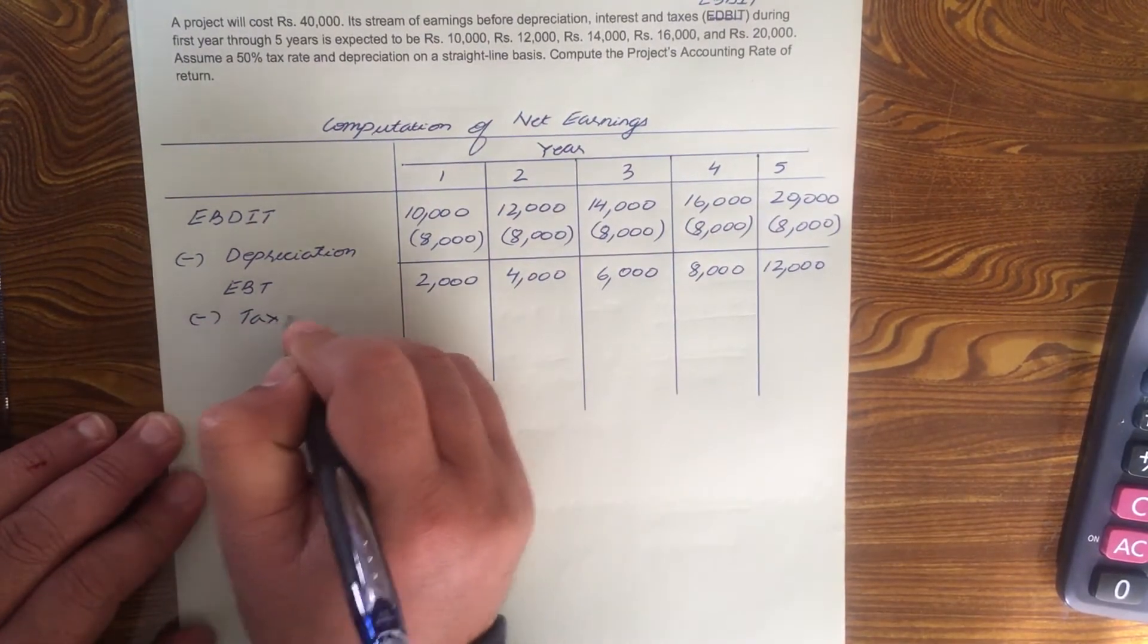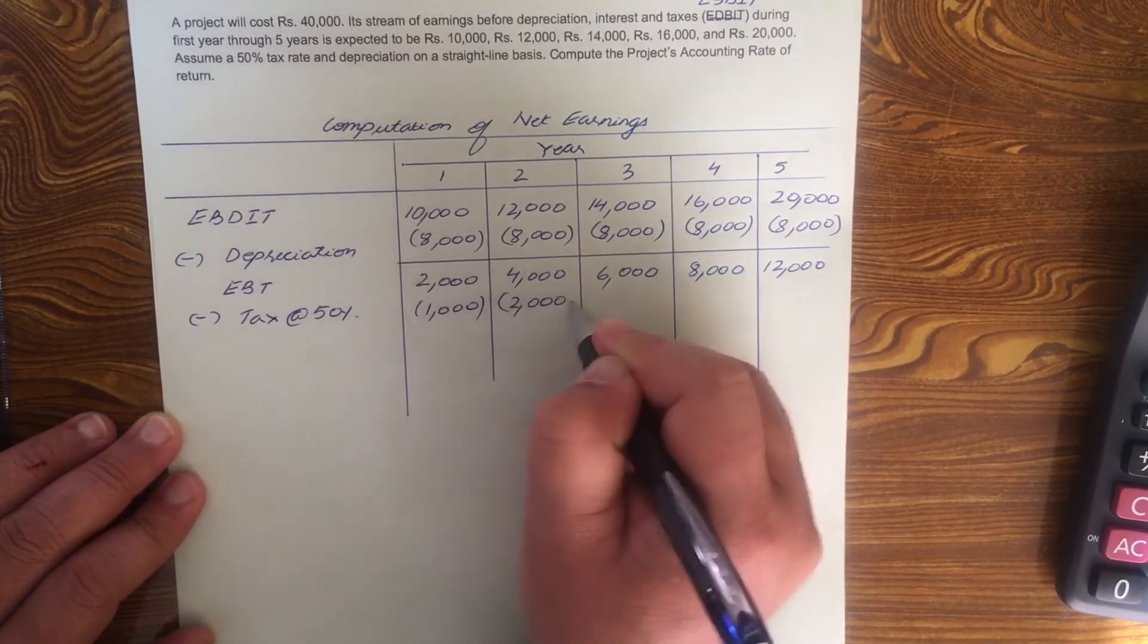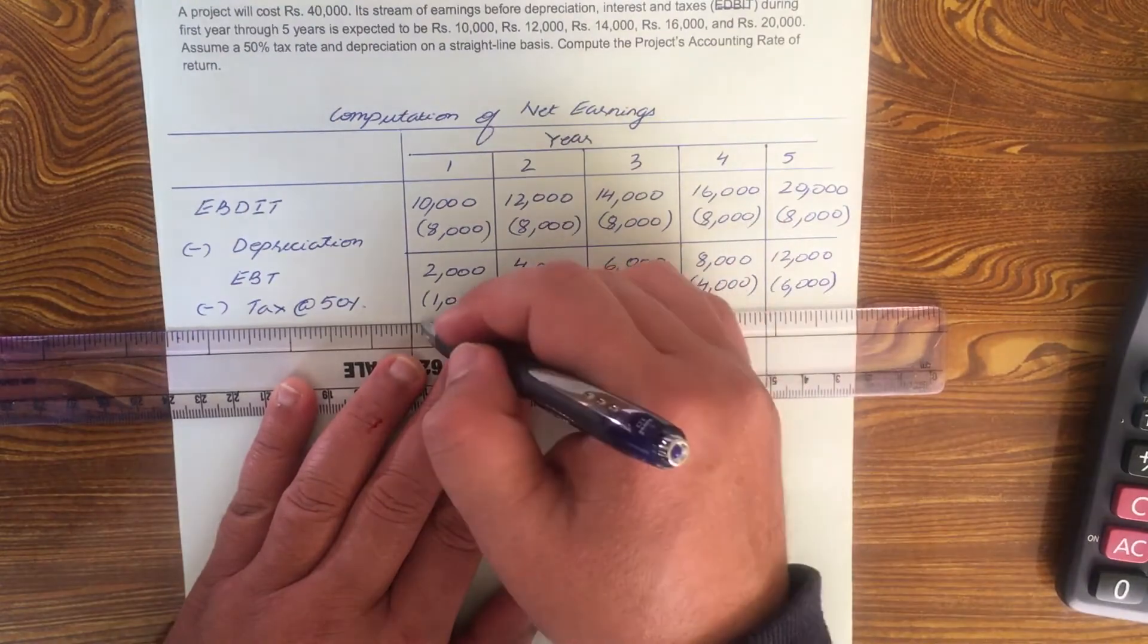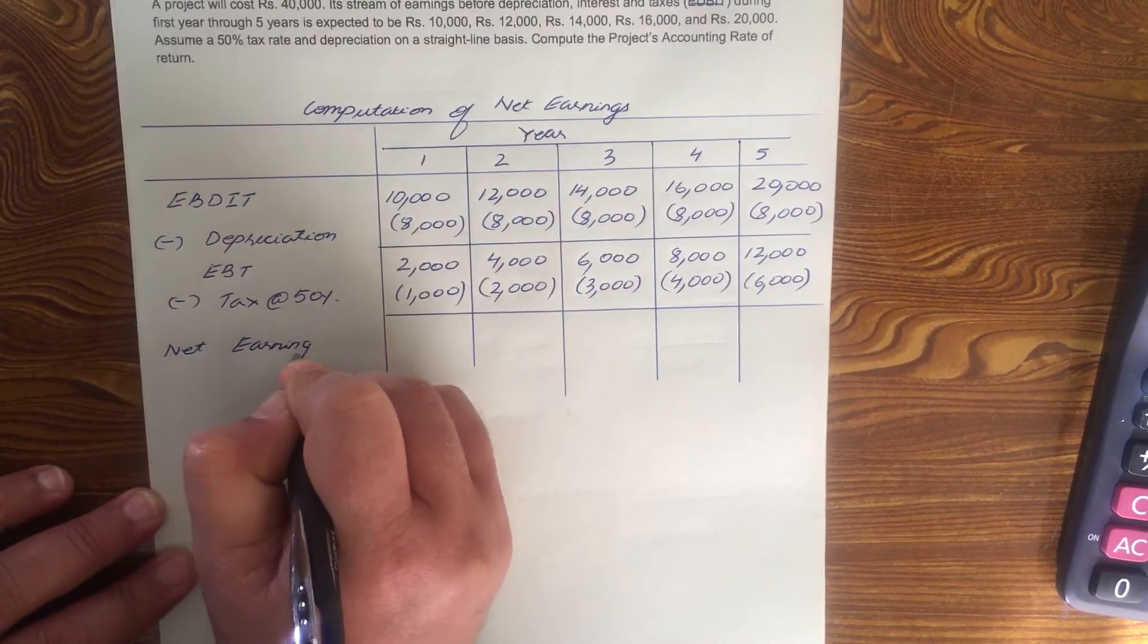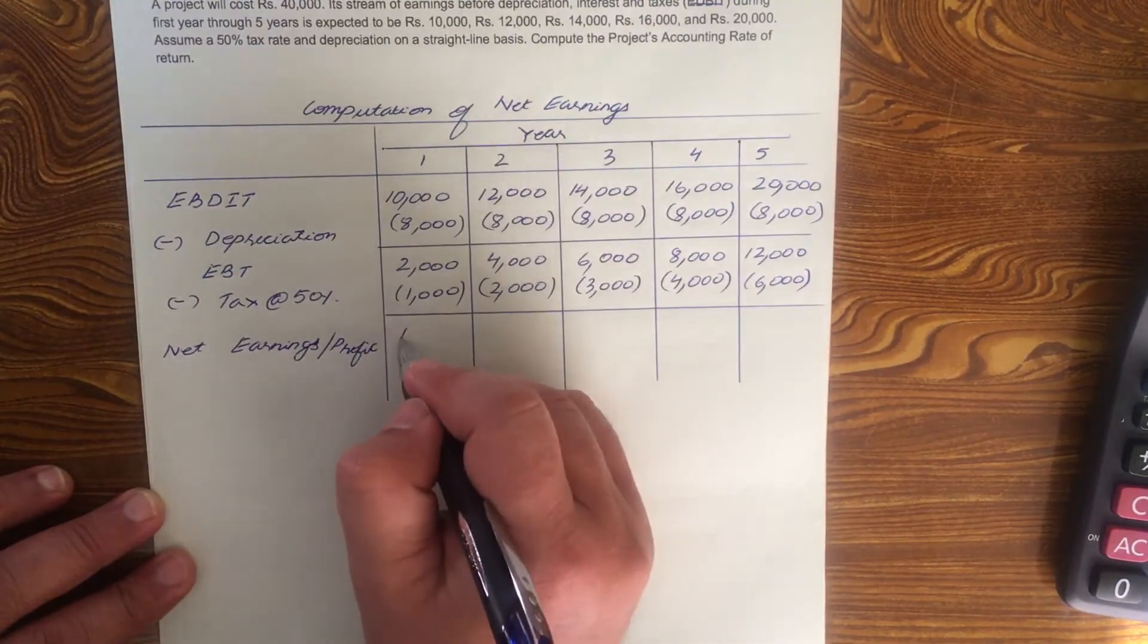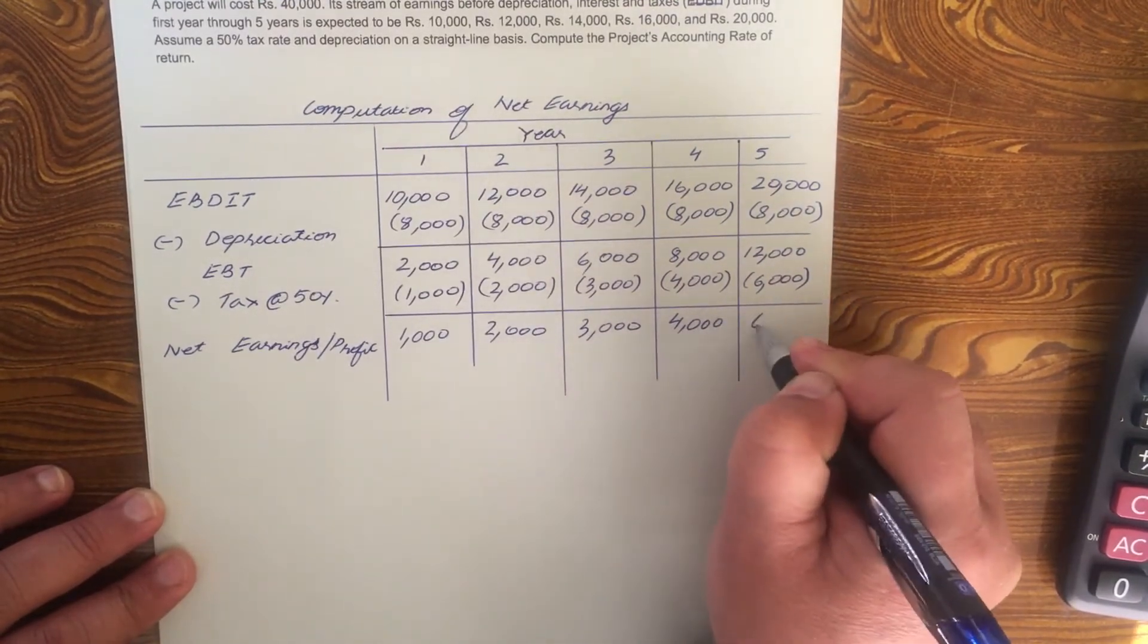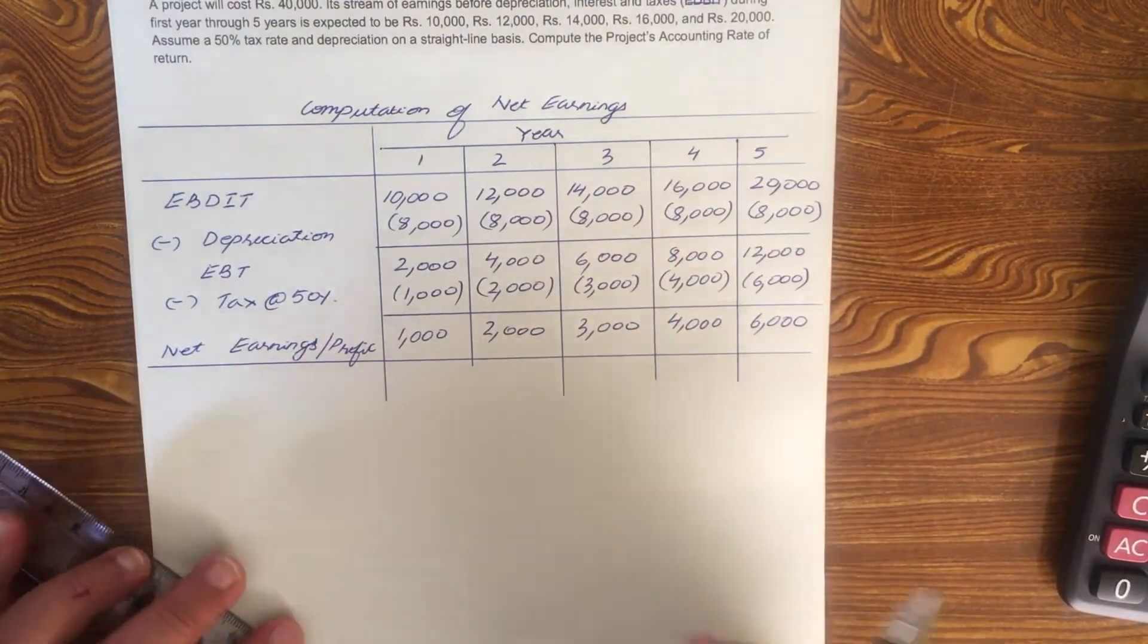From here deduct tax. Tax rate is 50 percent. So what is 50 percent of 2,000 is 1,000. This will be 2,000, 3,000, 4,000 and 6,000. Finally, your net earnings or your profit is 1,000. 2,000 minus 1,000 is 1,000. 4,000 minus 2 is 2,000. 6 minus 3 is 3,000, then 4,000 and 6,000. So there we have it, we have net earnings.